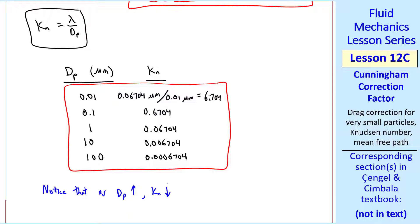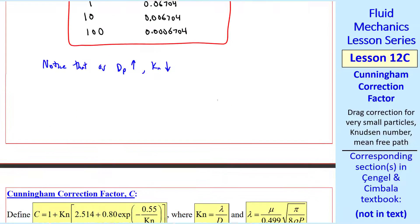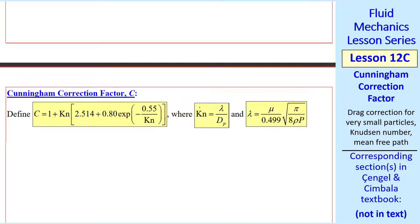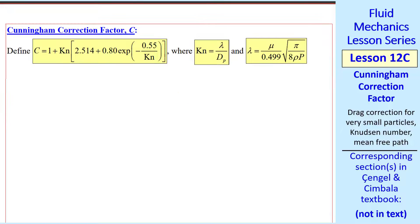Notice that as dp goes up, Kn goes down. Now finally, we can define the Cunningham correction factor, C. Here's the equation for Cunningham correction factor. You see it's a function only of Knudsen number. So once we calculate Kn, we can calculate C easily with this equation.